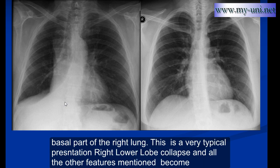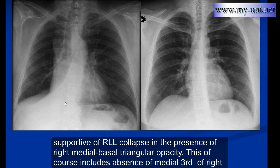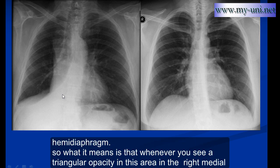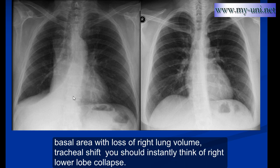This is a very typical presentation of right lower lobe collapse, and all the other features mentioned become supportive of right lower lobe collapse in the presence of right medial basal triangular opacity. This of course includes the absence of the medial third of the right hemidiaphragm. Whenever you see a triangular opacity in the right medial basal area with loss of right lung volume and tracheal shift, you should instantly think of right lower lobe collapse.